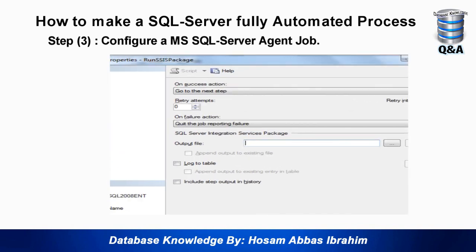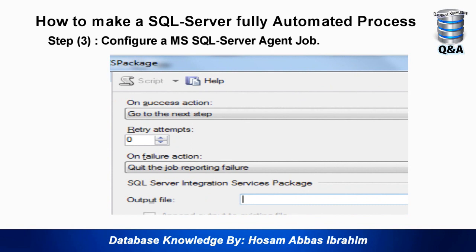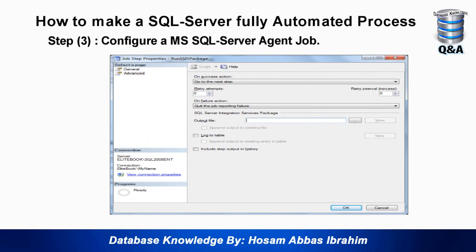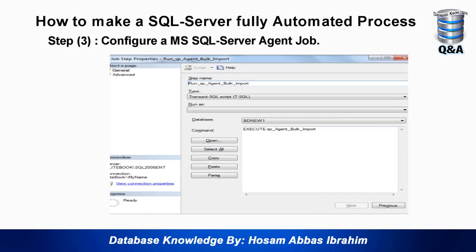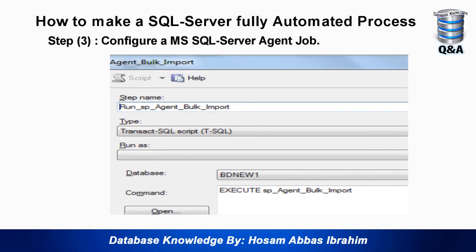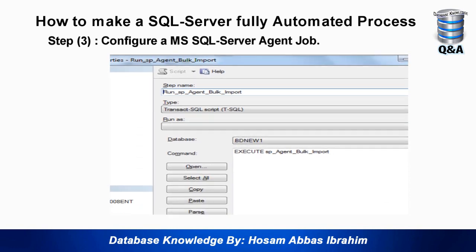For step one's Advanced settings: by default, on success go to the next step — leave that as is. On failure, quit the job reporting failure — leave that as is. Press OK. Step one is ready. For step two, we run the stored procedure that manages the whole process — sp_agent_bulk_import. Enter that as the step name, set the type to 'Transact-SQL Script', choose the database 'bd_new', and in the command write EXECUTE followed by the stored procedure name. In Advanced, leave settings as default, then press OK.